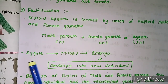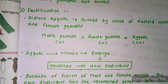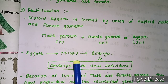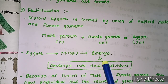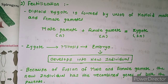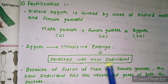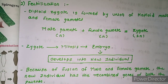The zygote will not directly form an embryo or new child. The zygote first undergoes mitotic division, and after mitotic division an embryo forms. When that embryo receives nourishment it develops into a new individual. Because of fusion of male and female gametes, the new individual has recombined genes of both parents — it will have characters of both parents.